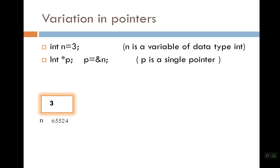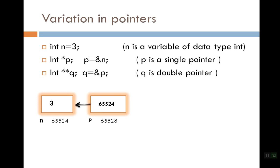So now our pointer P has address 65528. When the next statement executes — P equal to &n — the address of n, which is 65524, goes into the value of P. So P now points to n. Similarly, when we have integer star star q, this is a double pointer. Inside it we are putting the value of address of p, so q gets the address of p which is 65528. Now q points to p.